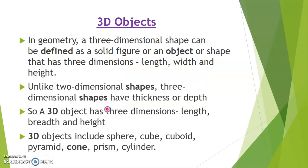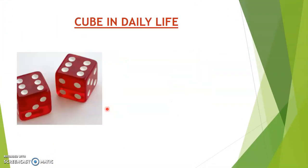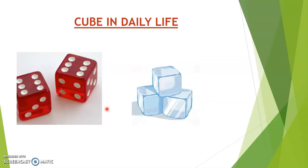Now here we have cube in daily life. This is a dice. It has six square faces. Can you find a dice-like shape, I mean some cuboid, in your daily life? Yes, you can find it in your refrigerator like this. Yes, these are ice cubes and you can find them in your refrigerator.